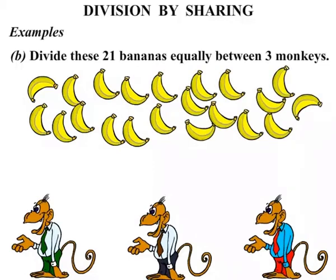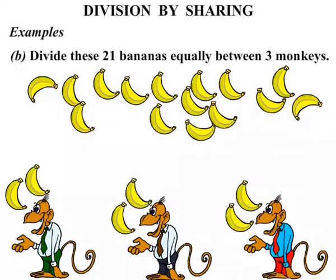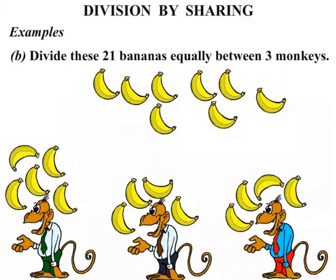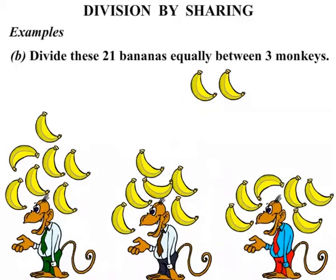So again what we'll do is move the bananas one at a time. 1, 2, 3, 4, 5, 6, 7, 8, 9, 10, 11, 12, 13, 14, 15, 16, 17, 18, 19, 20, 21. So they've been split up evenly.